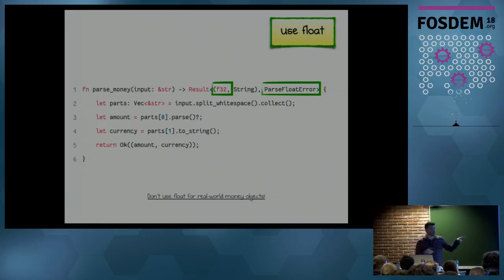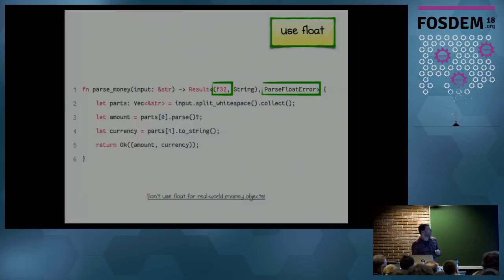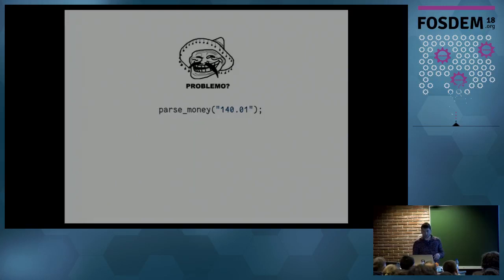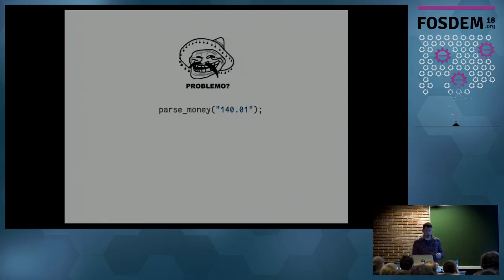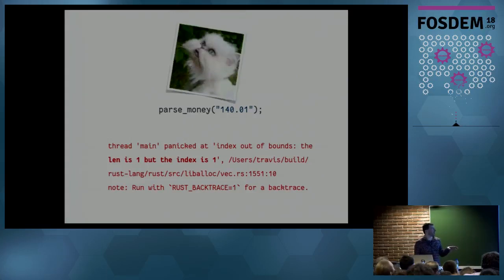People with experience handling money: float is not a good idea — don't use float in production code. This talk is about Rust semantics, not proper business logic, so for this example it's fine, but in production please don't use float for real-world money objects. Now I want to improve the error handling. We switch to f32 and return a ParseFloatError. When we parse a valid amount and currency we get our first real result — a tuple of float and currency. But what about a string with no currency? That's an error variant, and running the code causes a runtime panic: 'length is one but index is one.'